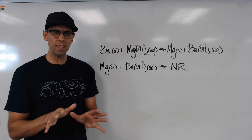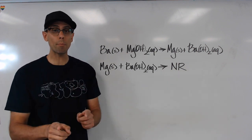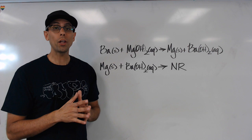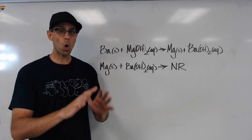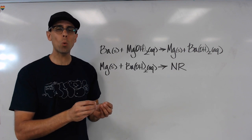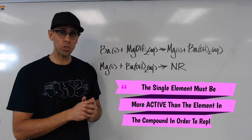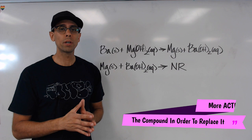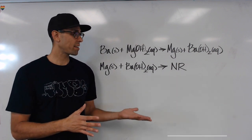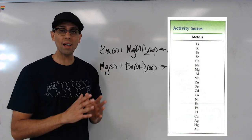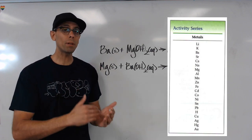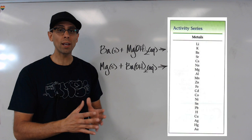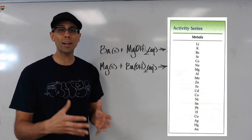Is it the case that every time we have a single element reacting with a compound, we're always going to get a single replacement reaction? The answer is actually no. Single replacement reactions only occur if the single element is what we call more active than the element in the compound that it's reacting with. So how do we know whether or not the single element is more active? We need to refer to something called an activity series — a table that organizes single elements based on their ability to replace other elements. This is typically not memorized; it's usually a reference chart you're allowed to use during a homework assignment, project, or exam.